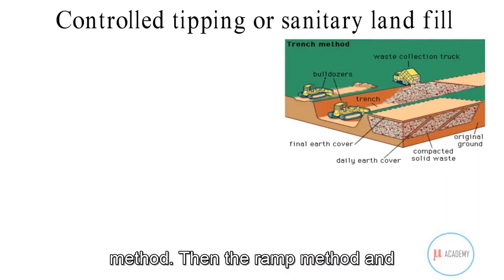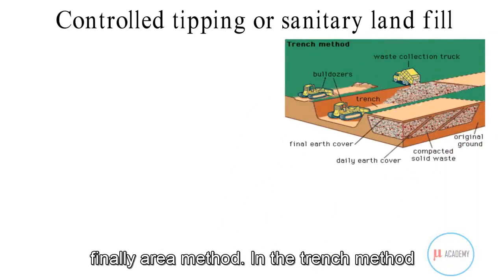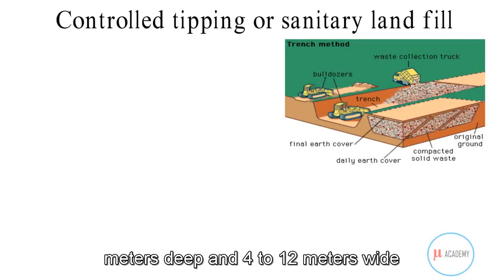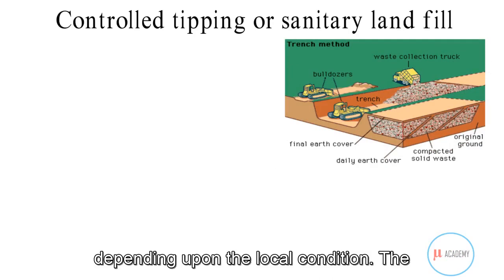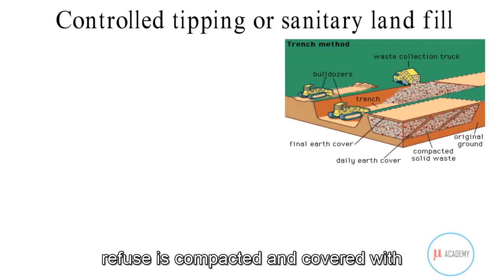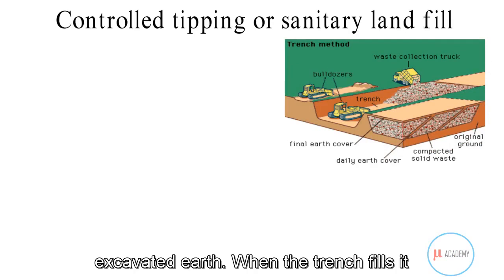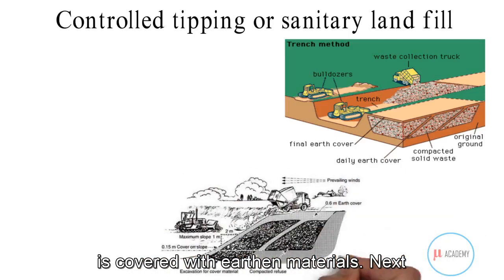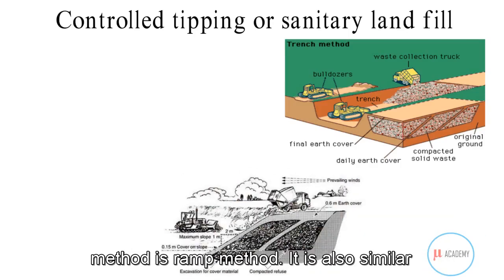In the trench method, a long trench is dug, usually two to three meters deep and four to twelve meters wide, depending on local conditions. The refuse is compacted and covered with excavated earth. When the trench fills, it is covered with earthen materials.